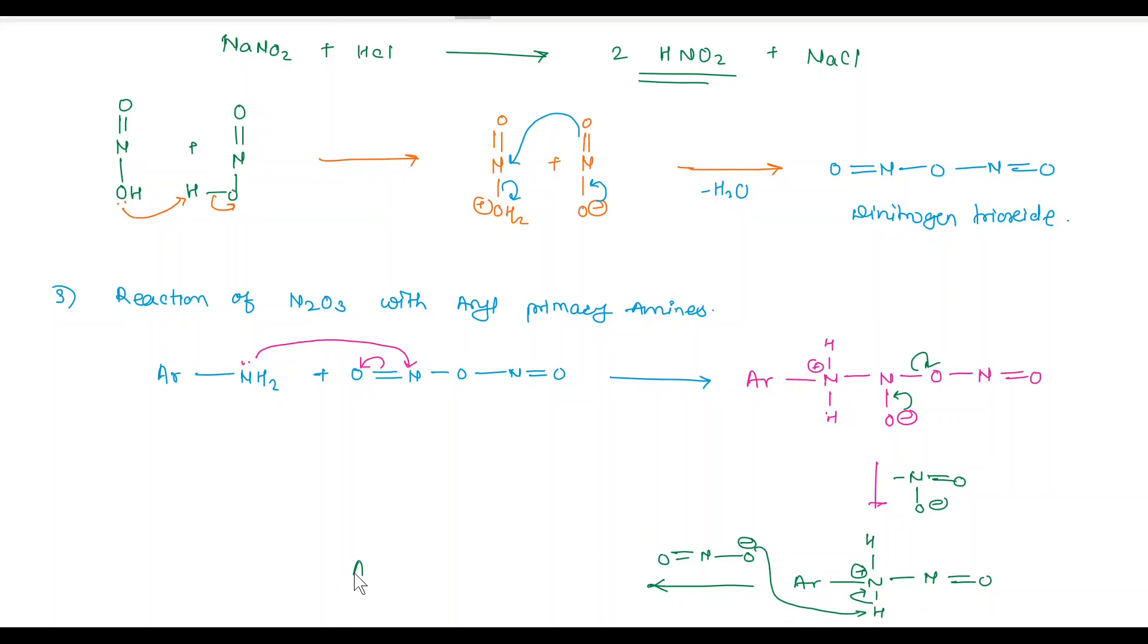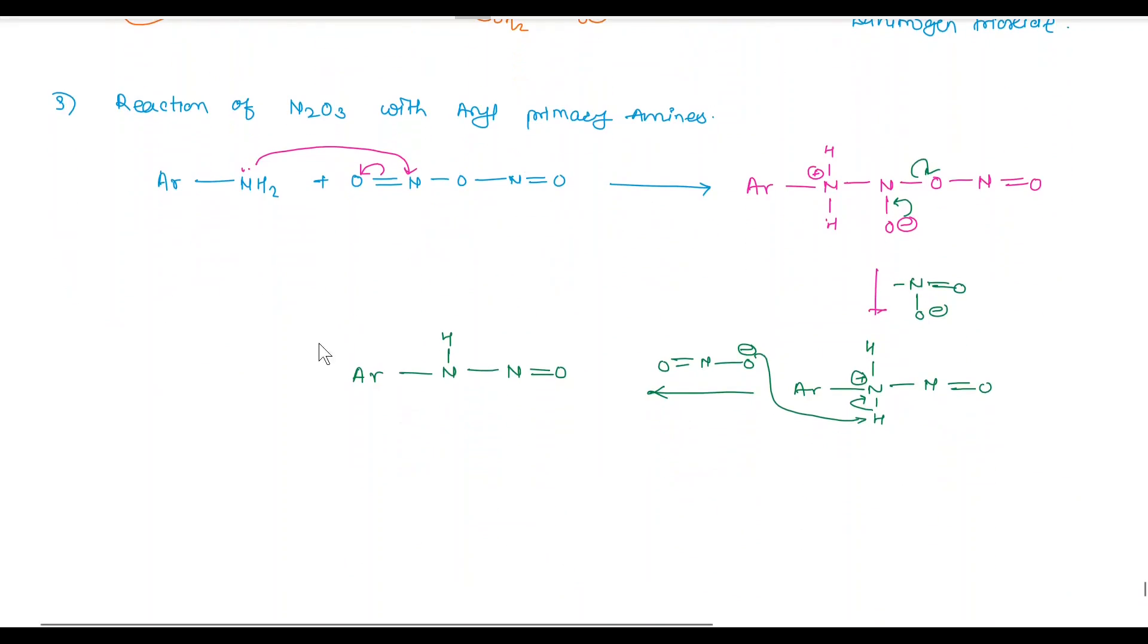In next step, this NO2 negative abstracts this proton. And we get here ar bond nitrogen bond hydrogen bond nitrogen double bond oxygen. In next step, tautomerization takes place, that is shifting of this hydrogen on this oxygen. And we get here ar bond N double bond nitrogen single bond OH.